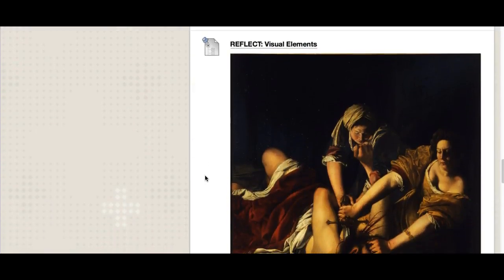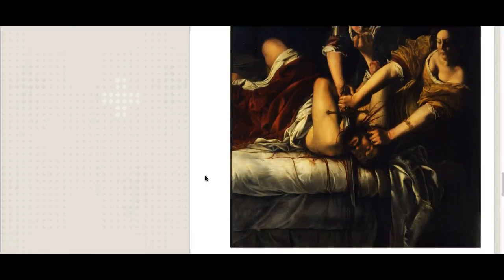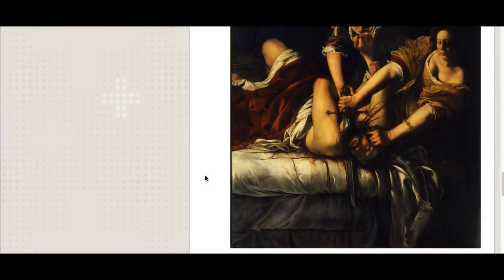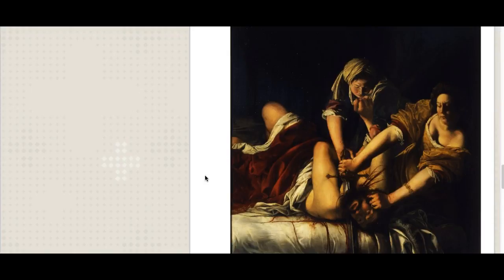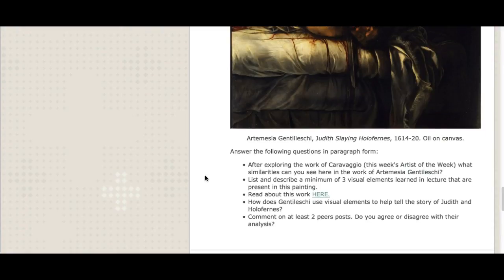The next item is our reflection, which is a discussion board this week. We're going to be talking about visual elements and tying in Caravaggio, because we're looking at a painting by a female artist from the 1600s named Artemisia Gentileschi — this one is called Judith Slaying Holofernes. Caravaggio did a version of this painting as well, and it's interesting to compare and contrast the two. Answer the following in paragraph form: after exploring Caravaggio's work, what similarities can you see in Gentileschi's work? List and describe three visual elements learned in lecture that are present in this painting.